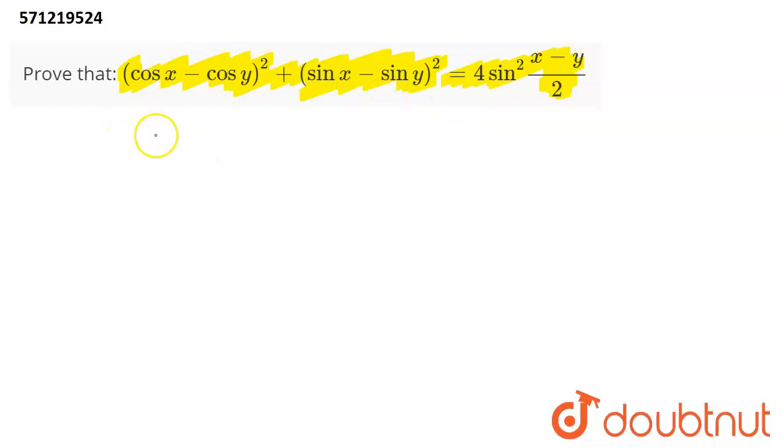first of all, you should know the expansion of (a - b)². It is a pretty standard algebraic formula that you must remember. It is a² + b² - 2ab.